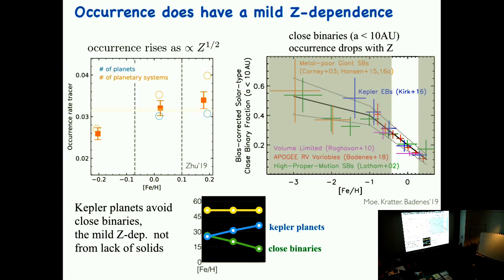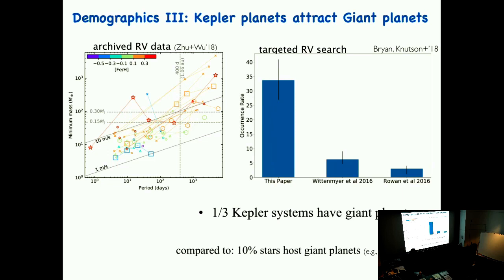We are still left with the same question: why is it that Kepler planets don't care about metallicity? Arizona is a great place to come to because quite a lot of people here work on protoplanetary disks. The field is changing — people used to think disks have certain masses similar to the minimum-mass solar nebula, but we may now be thinking disks have way more mass. If a disk has way more mass and if the observations pan out, maybe that will help us deal with the mass budget in forming Kepler planets. So that's the second demographic result: 30% occurrence rate, and no metallicity dependence.